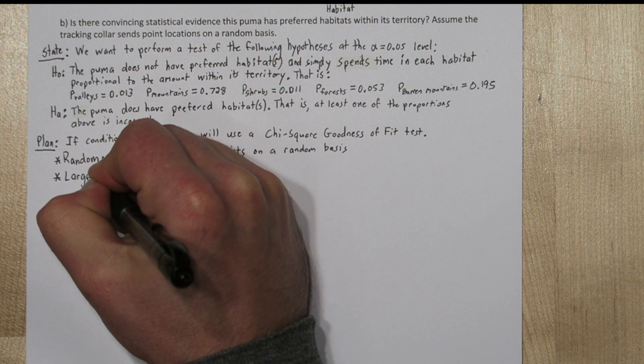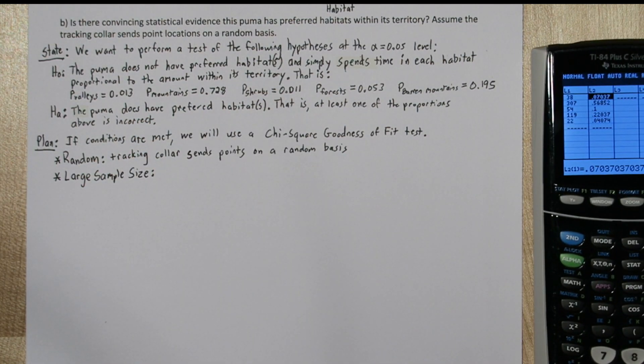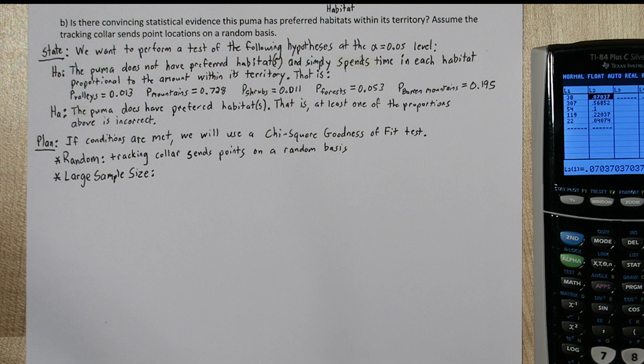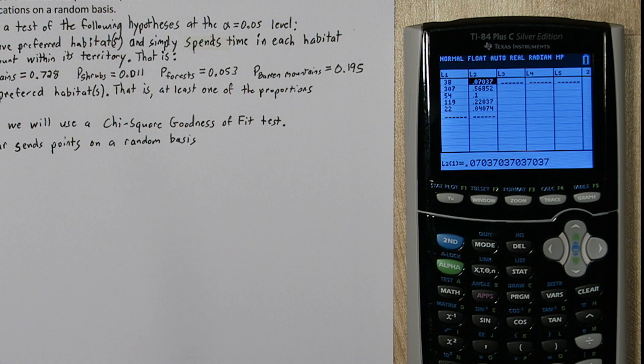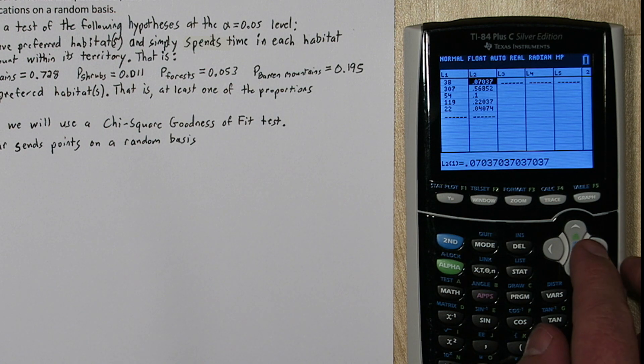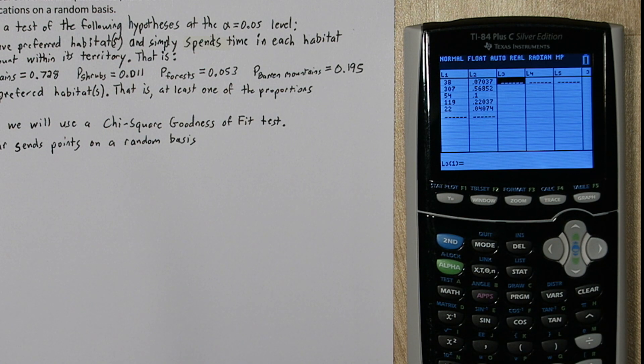Now we have to check for large sample size. To do this, we're going to use our calculator and our list again. Now as a reminder, list two is the proportion of time we actually observed the puma in each of these habitats.